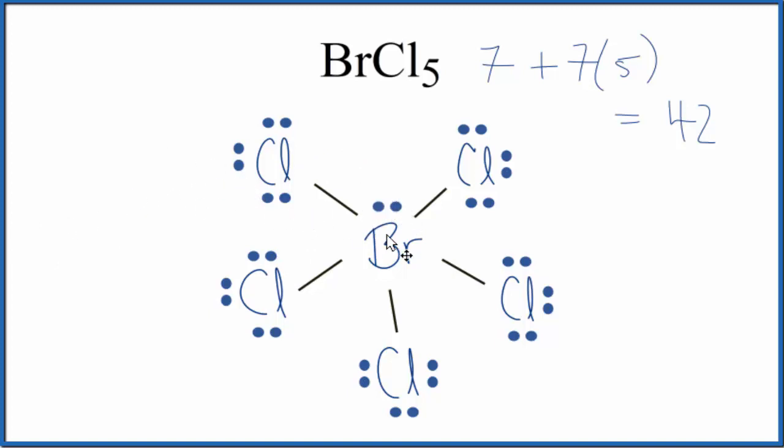And again, the bromine can have an expanded octet. So it has more than 8, but it's able to do that. So we've drawn the Lewis structure for BrCl5. We've used all 42 valence electrons. All the chlorines, they have octets. The central bromine, that has an octet as well.